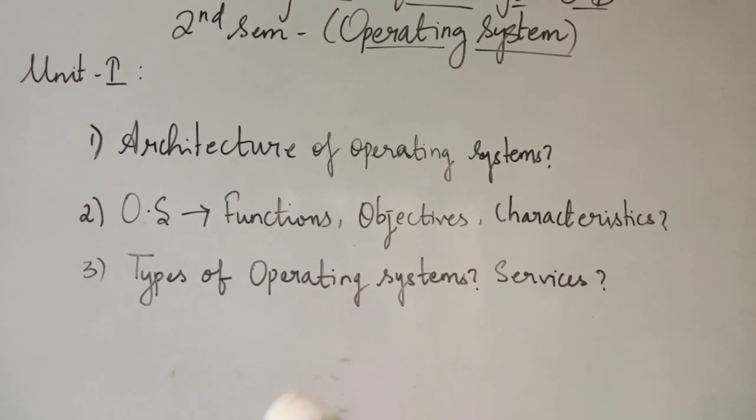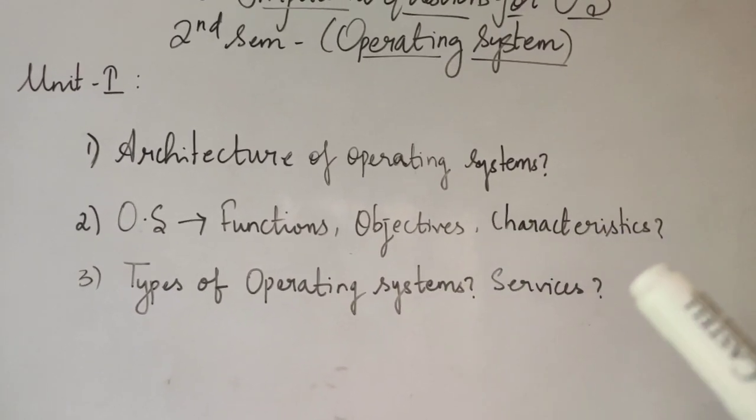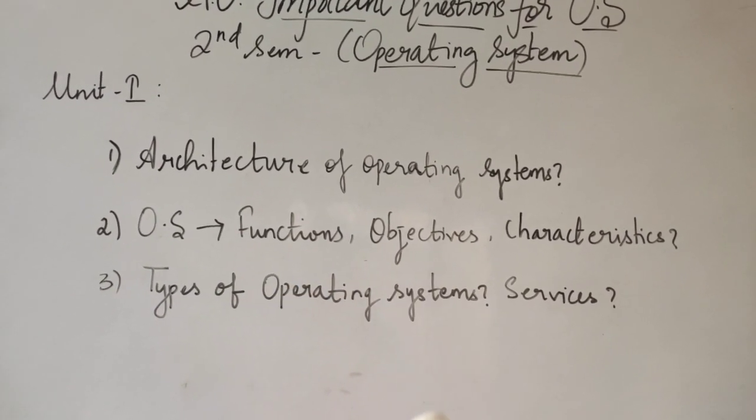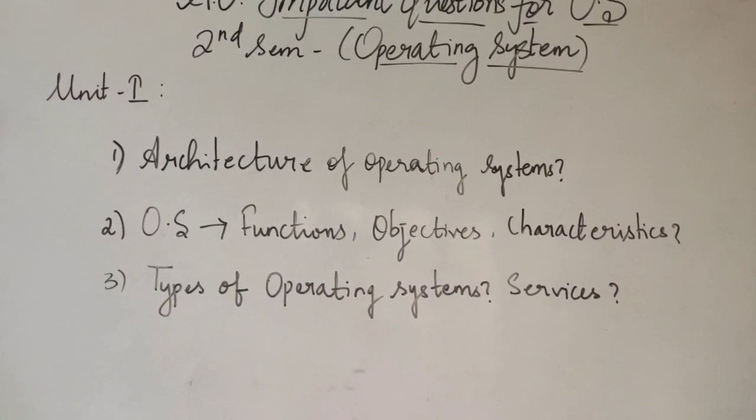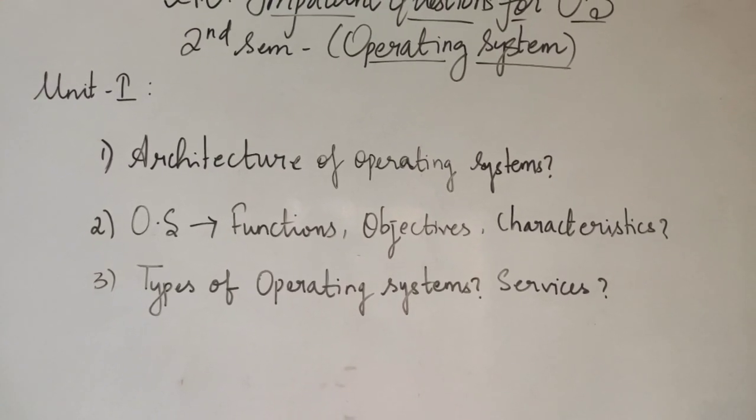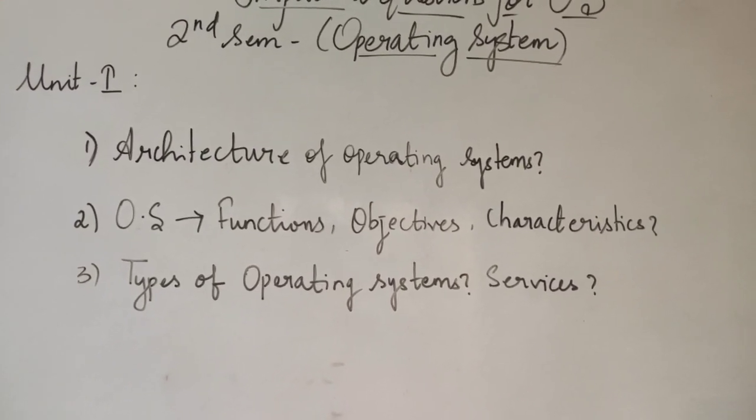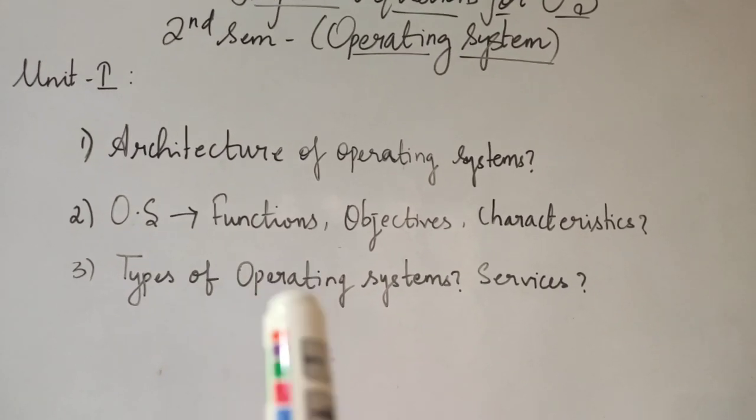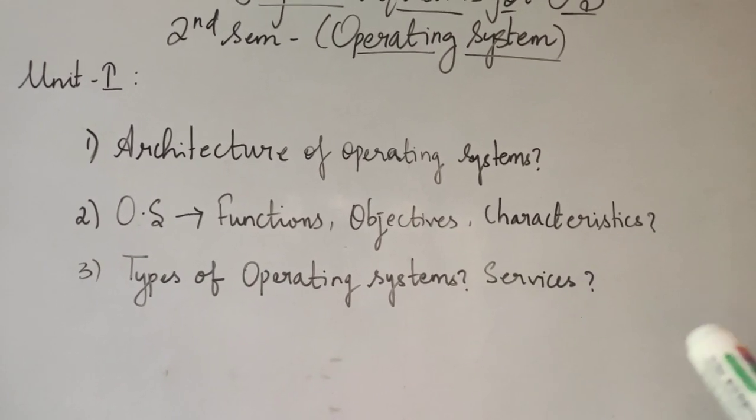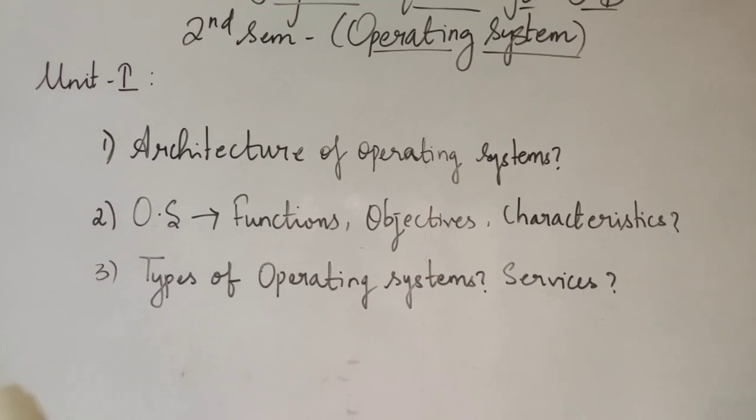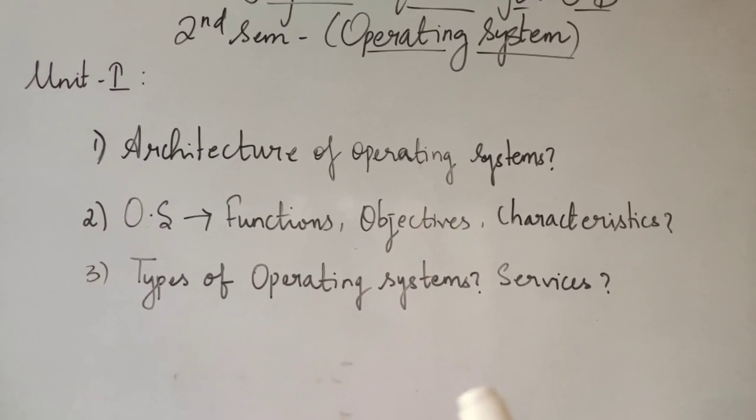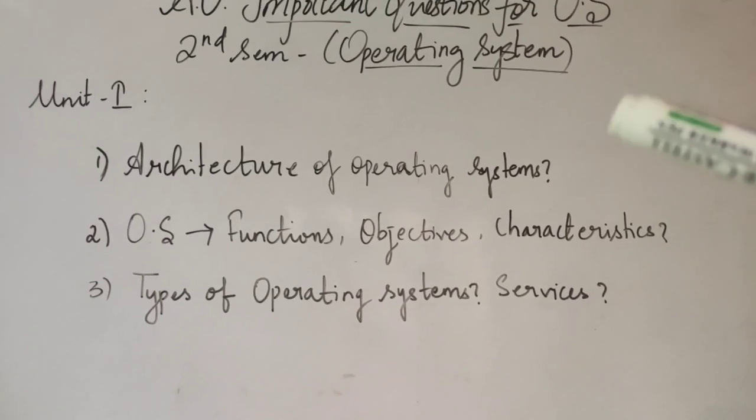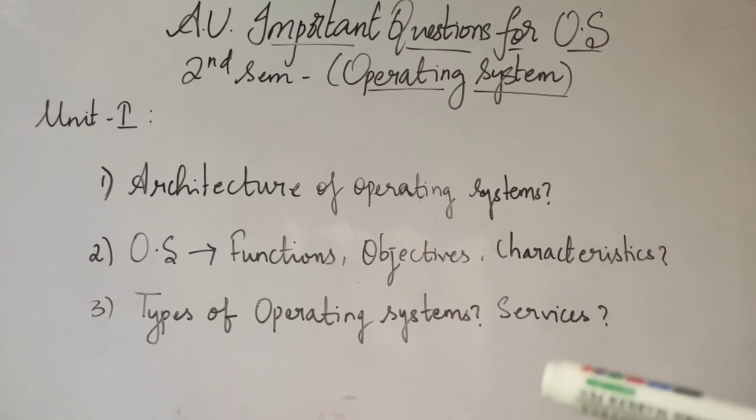You need to know that. Next, what are its functions, its objectives and characteristics? Learn the functions, objectives and characteristics. The third important question is what are the types of operating system and its services. So these are the three important questions from unit 1.